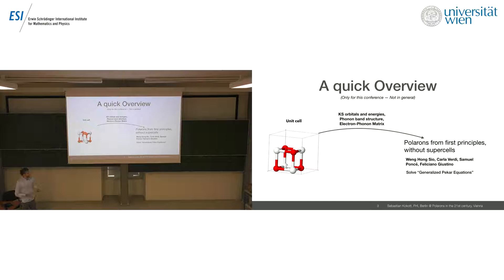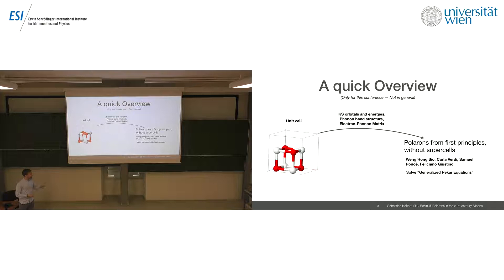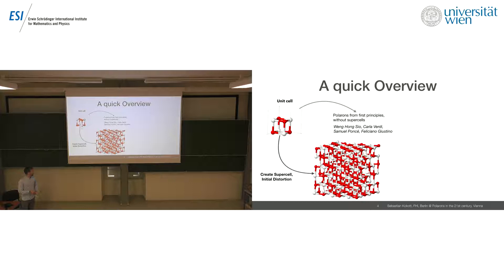A quick overview of what you can do: basically you can simulate a polaron using just properties you can calculate from a unit cell, which was presented by Feliciano Giustino this week, where you use the Kohn-Sham orbitals and energies from your DFT calculation, and polaron band structure and electron-polaron matrix elements from DFT.